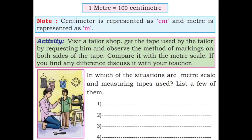1 meter is equal to 100 centimeter. Note: centimeter is represented as cm and meter is represented as m.